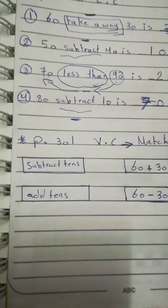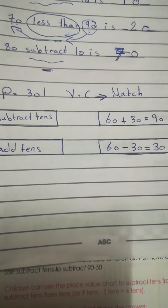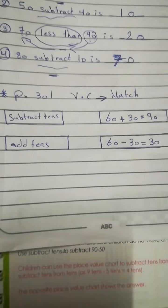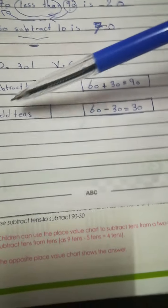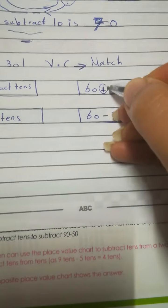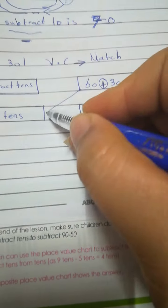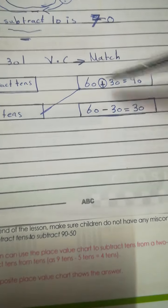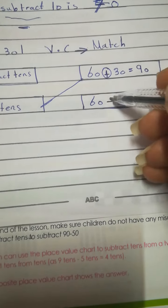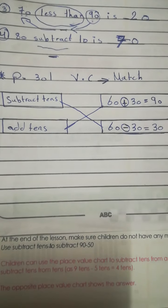Okay, miss? And now go with me to page 301. Vocabulary check. We have to match. Subtract tens, add tens. When we add, when we use plus, right? Add means plus. So, here, add 10. Subtract means minus. So, here, subtract 10. Okay?